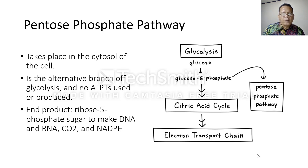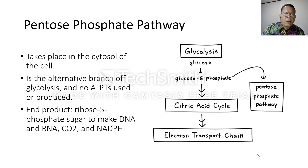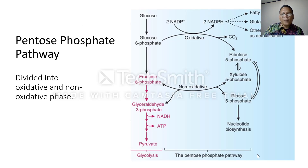Now let's move to the pentose phosphate pathway. This pathway takes place in the cytosol of the cell and is an alternative branch of glycolysis. No ATP is used or produced as the endpoint of this pathway. The products are ribose-5-phosphate — a sugar used to make DNA and RNA — carbon dioxide, and NADPH. The pathway is divided into oxidative and non-oxidative phases.